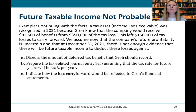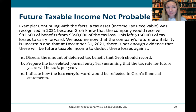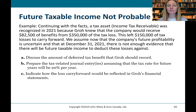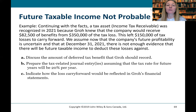Now continuing with the facts — but changing our assumption. A tax asset or income tax receivable was recognized in 2021 because the company knew it would receive $82,500 of benefits from $350,000 of the tax loss. This left $150,000 of tax losses to carry forward. But now we assume the company's future profitability is uncertain — it's not more likely than not that there will be future taxable income to deduct these losses against. If it's not more likely than not that the asset can be realized, we will not recognize it in our financial statements. The $150,000 loss carry forward would be reflected only in the notes to the financial statements, showing the expiry dates — these will expire in 2041.